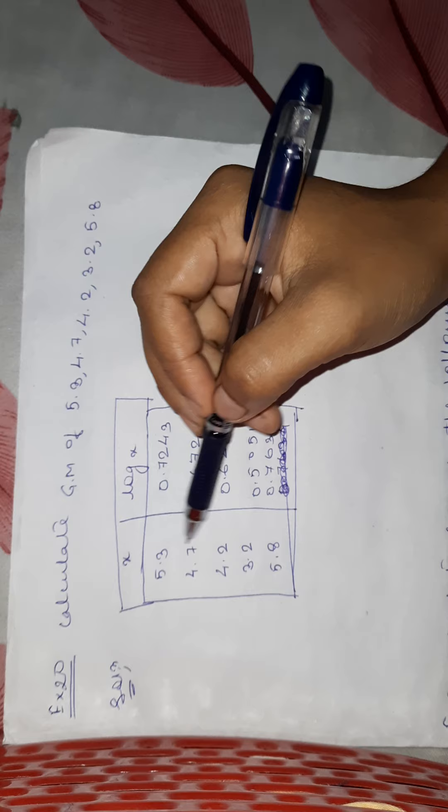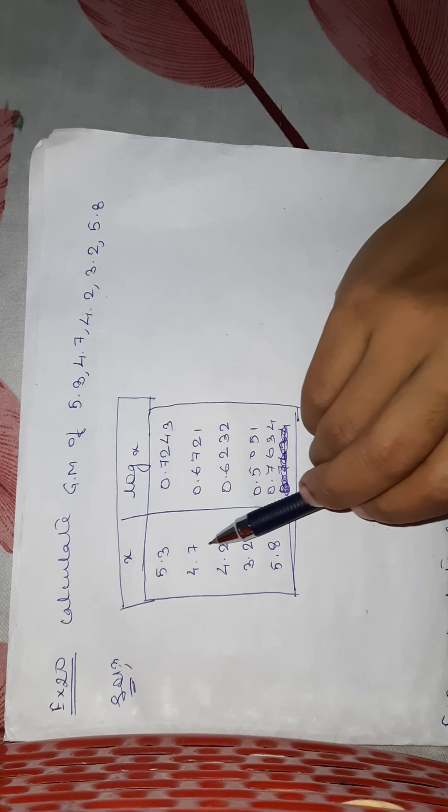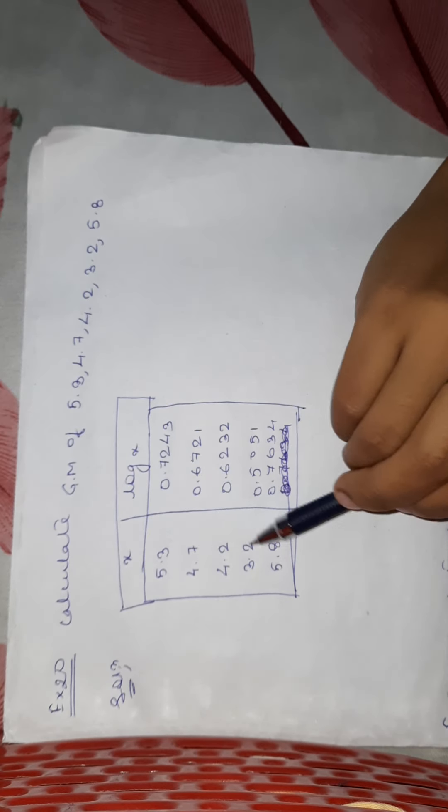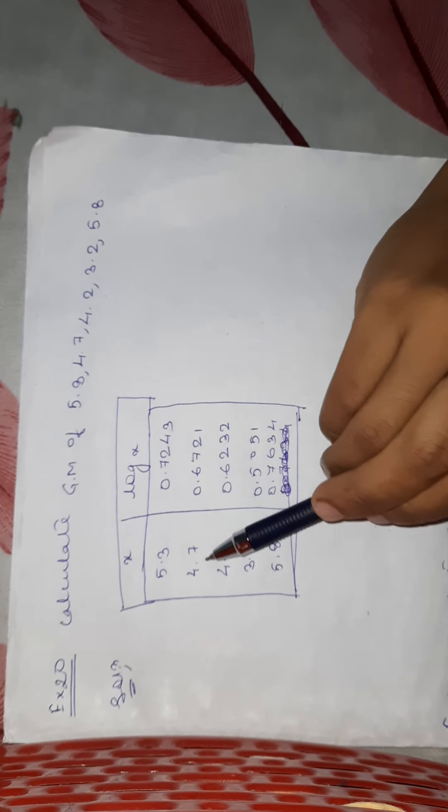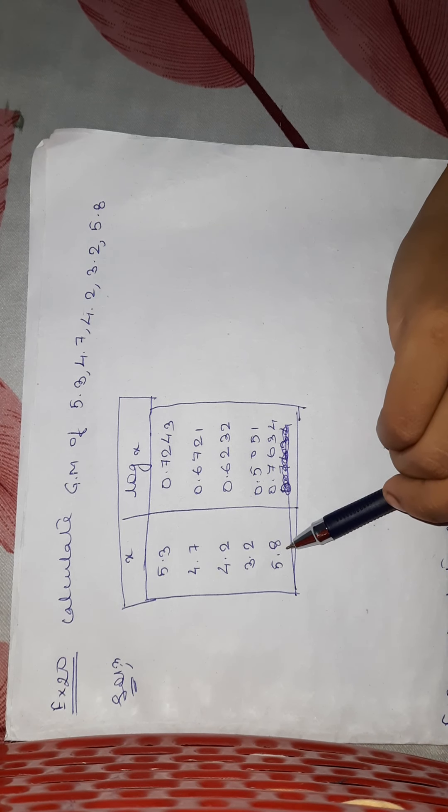At first, you have to write the values of x which are given in your question. And then you have to find the respective log of these values: log 5.3, log 4.7, log 4.2, log 3.2 and log 5.8.